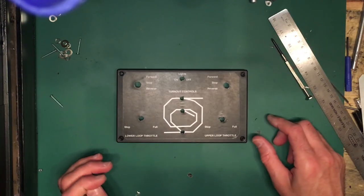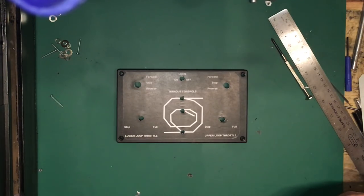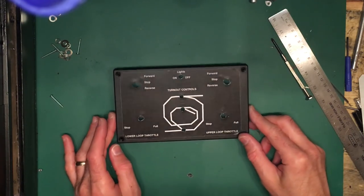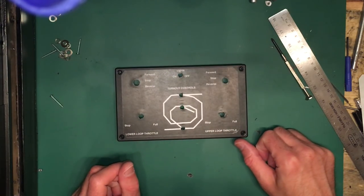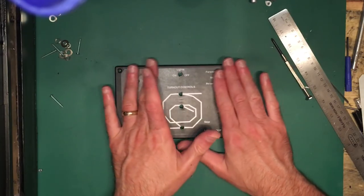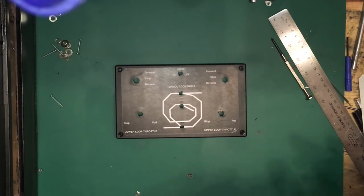Now the holes are cut out for the controls, and you can get an idea that everything will line up reasonably close to being correct. So now I'm going to apply a coat of some clear matte finish.